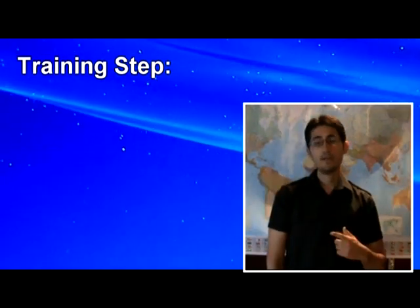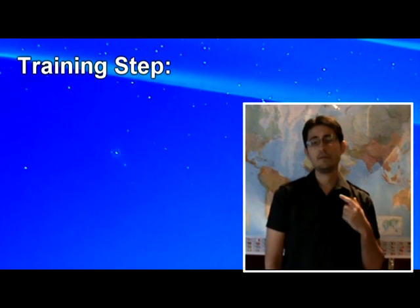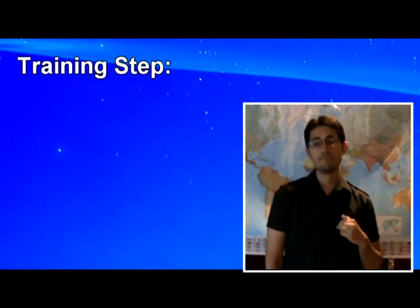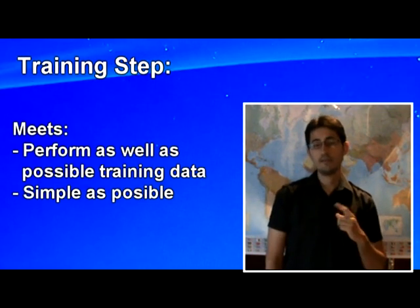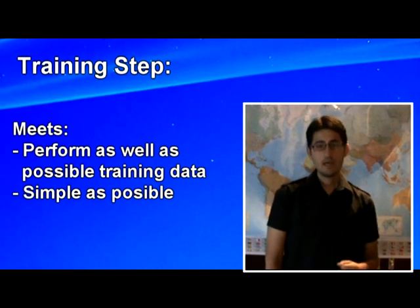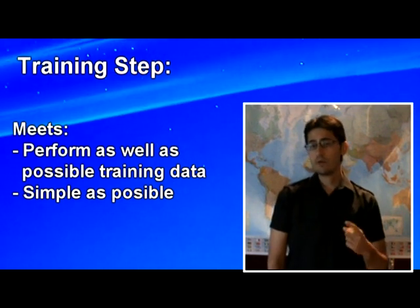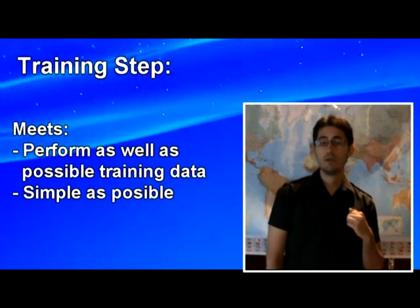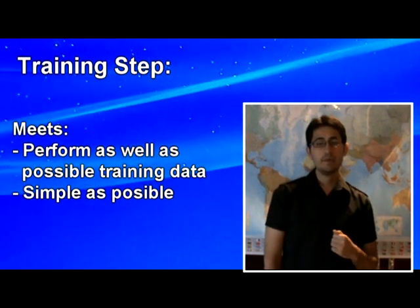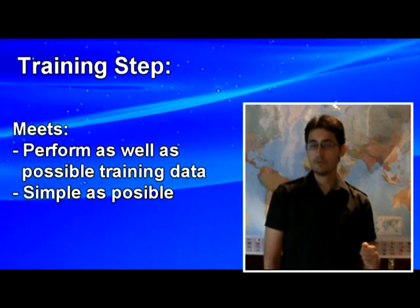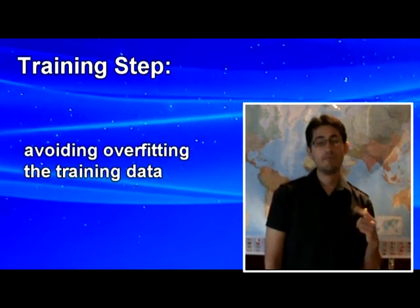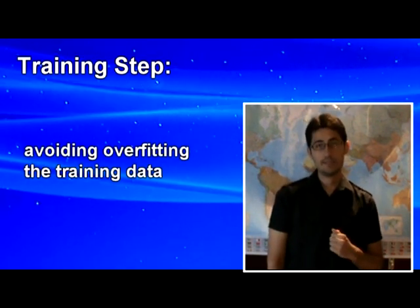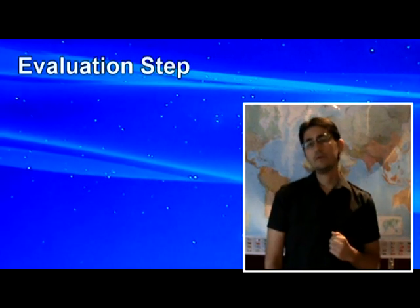The model that is generated is typically the best model that can be found that simultaneously matches two conflicting objectives: to perform as well as possible on the training data and to be as simple as possible, so the model avoids overfitting the training data.